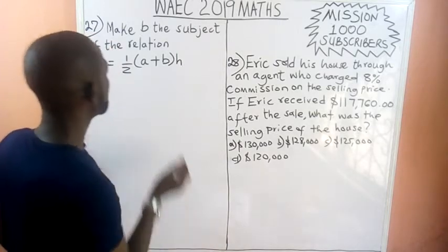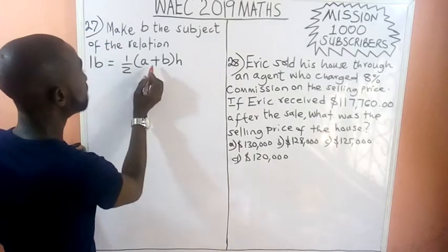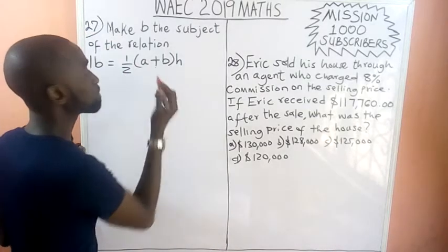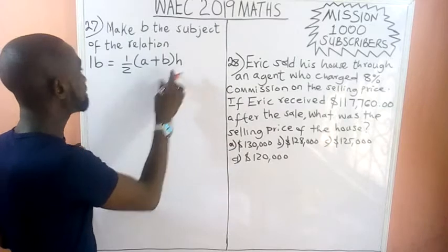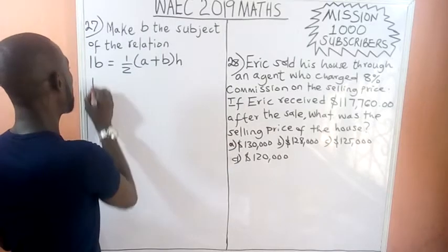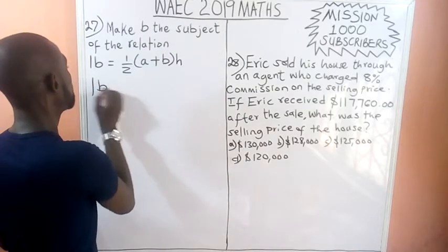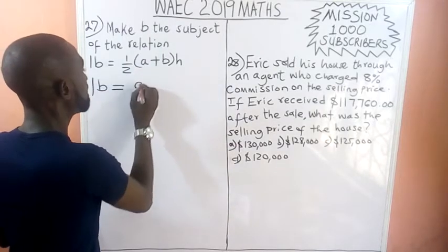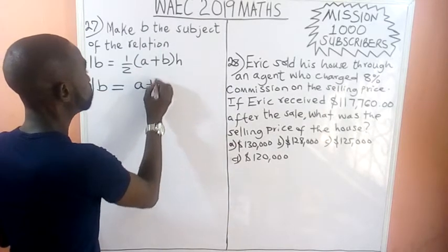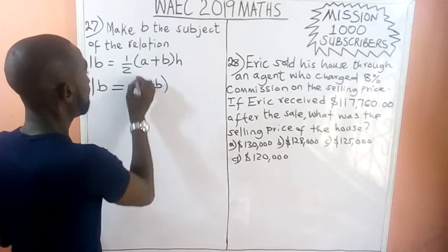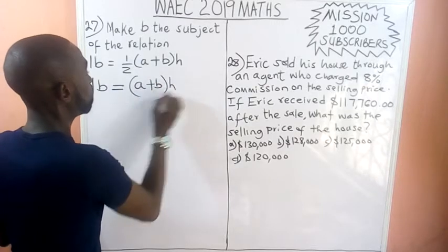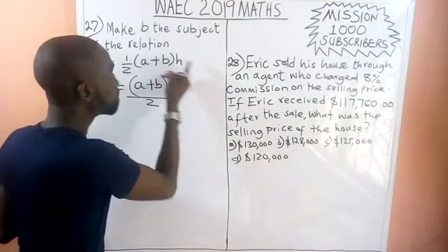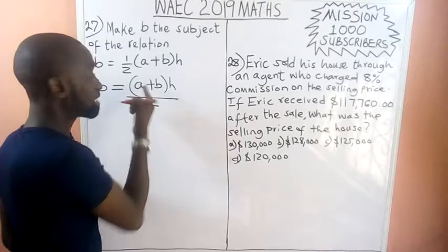So the first thing we do is open this bracket. I can write this as: lb equals a plus b, times h, all over 2. Because one-half times anything gives us that thing divided by 2. Then we use h to multiply a, and we use h to multiply b as well.